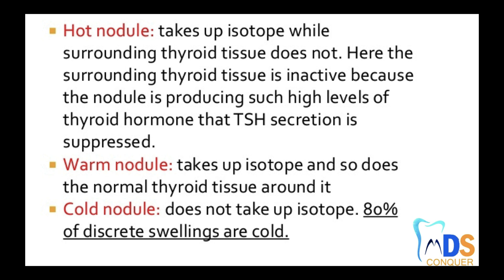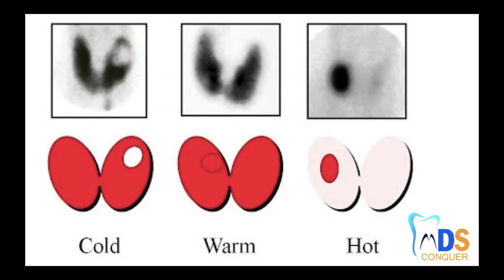The second is a warm nodule, in which both the abnormal tissue as well as the surrounding tissue take the isotope. You can clearly see in this radiograph how the abnormal tissue as well as the surrounding normal thyroid tissue both absorb the isotope, and the anatomy of the thyroid gland can be clearly differentiated.